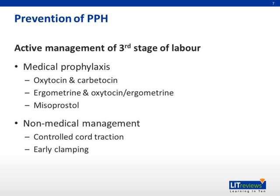Now we go on to prevention of PPH. The active management of the third stage of labor is pertinent and integral to the prevention of PPH. The first line of defense is of course medical prophylaxis, and there are three main types of medication you can use: first, oxytocin and carbetocin; secondly, ergometrine and oxytocin plus ergometrine; and lastly, prostaglandins — in this case, misoprostol. There is also non-medical management, including controlled cord traction and early clamping.